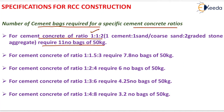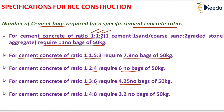Here, one proportion is for cement, one is for fine aggregate (sand), and two proportions are for coarse aggregate. For cement concrete of ratio 1:2:4, 6 bags are required. For 1:3:6, 4.25 bags are required. And for 1:4:8, 3.2 bags of 50 kg are required.